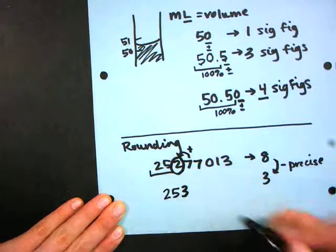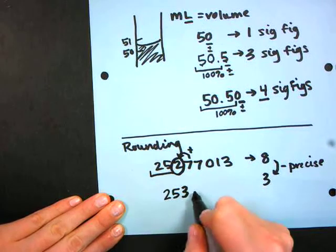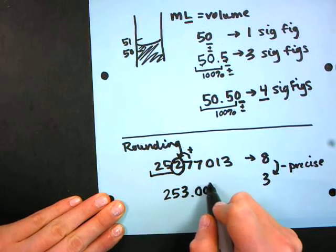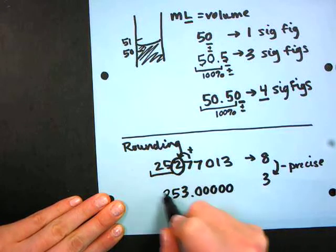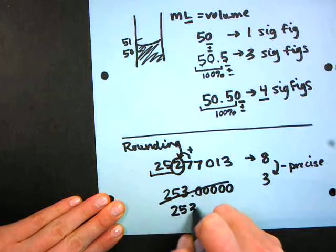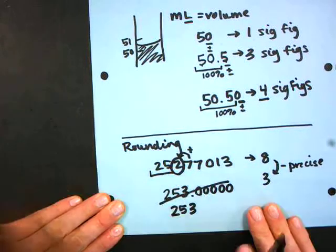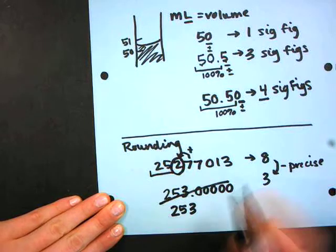So I have two, five, three, and this is where a lot of you are getting confused. Some of you are saying .0000, which is wrong. Some of you are saying just 253, which is also incorrect, because these numbers fundamentally change what I started out with.